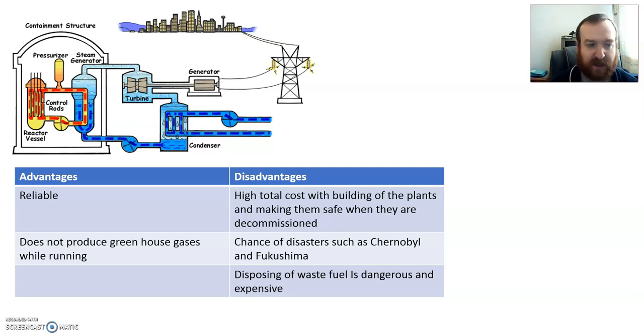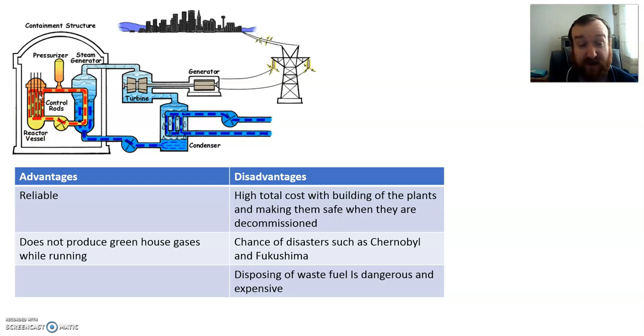When it undergoes nuclear fission, it produces heat, and that heat heats up this fluid. A lot of the time it's water, sometimes it's other materials. But it heats up this fluid here, which heats up water. The water turns into steam. Steam turns a turbine, which turns a generator. The cooled steam here is condensed back into water and it's reused. And the generator transfers that kinetic energy in the turbine into electrical energy that powers the city.